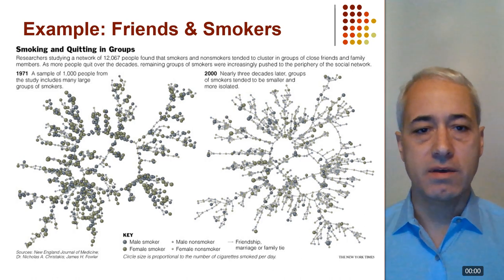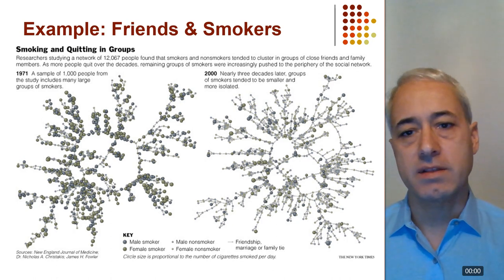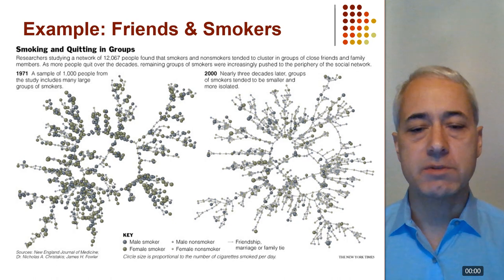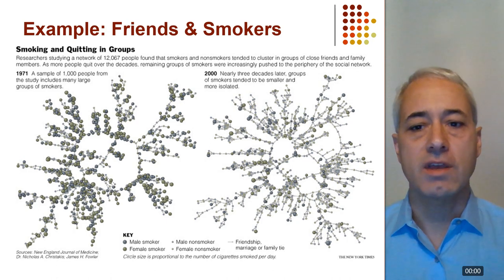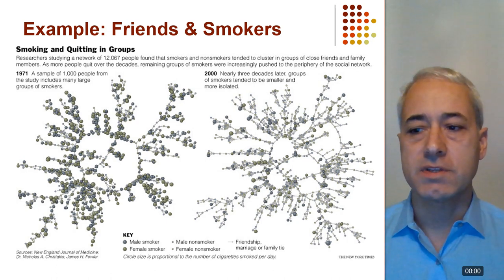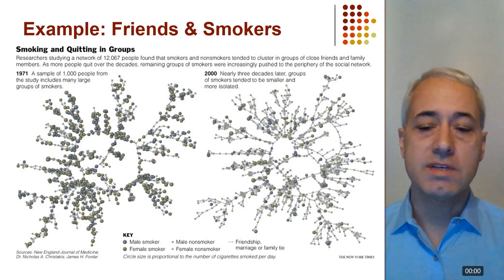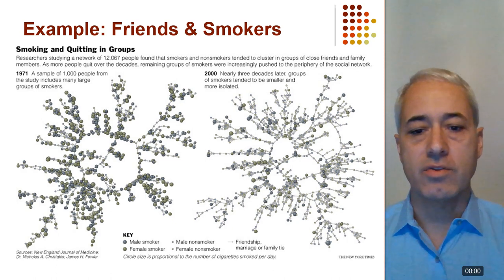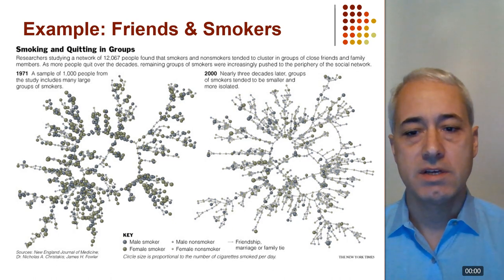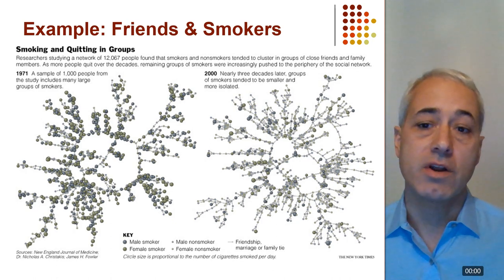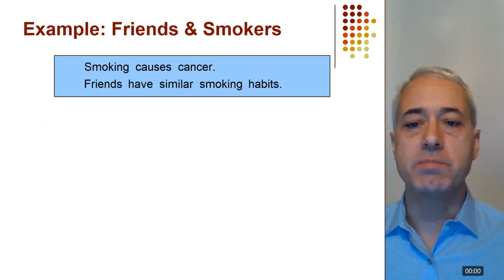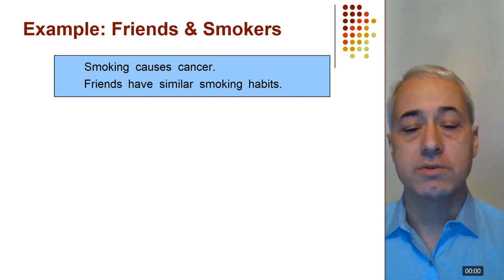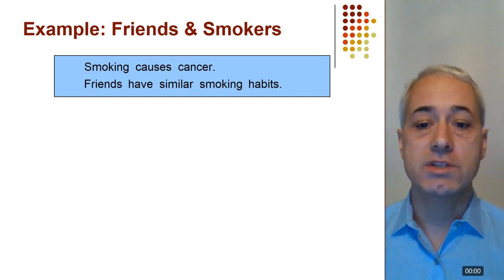Let's look at a simple example: smoking. Smoking causes cancer and it's hard to get people to stop smoking because they're influenced by the people around them. If your friends don't stop smoking, then you are unlikely to stop as well. This graph illustrates the reduction in smoking from the 70s to the 2000s — you can see there's less smoking, but the smokers that are still there are in clumps, they're clustered. So we want to model that social network influence in order to know how to intervene.